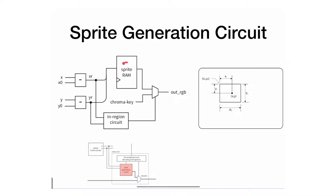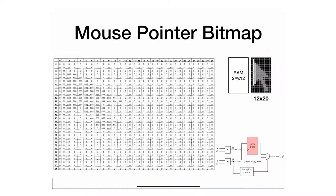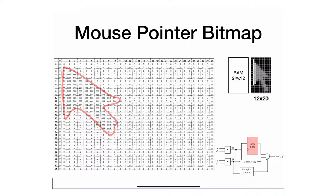The first part we look at is the sprite RAM. Any sprite needs some sort of memory to store its shape. In our case it's a pointer — a 12 by 20 shape. For simplicity with addressing, the RAM dimensions need to be powers of 2, so a 16 by 32 would work.